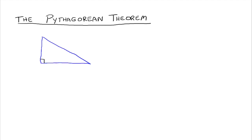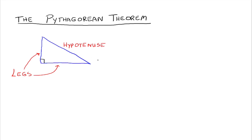The Pythagorean Theorem gives us a relationship between the sides of a right triangle. Before we get to that, we need to talk about the names of these things. The side that's opposite the right angle — this long side right here — is going to be the longest side, and it is called the hypotenuse. These other two sides that make up the right angle, that make up the 90 degrees, they are called legs. So this is one leg, and this is another leg, and this is the hypotenuse — those are the formal names for the three sides of a right triangle.